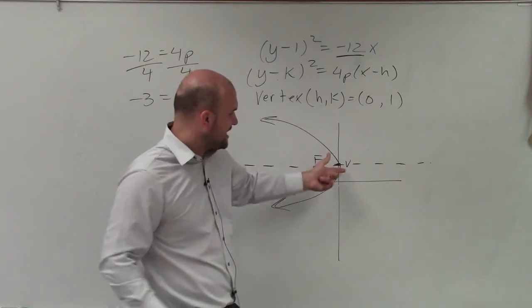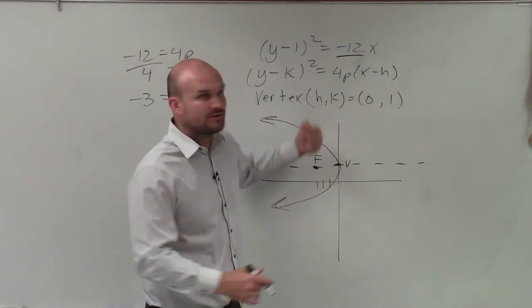Now, we have my vertex. We have the focus, which is from my vertex 3 units to the left. So I'll write focus is negative 3 comma 1.